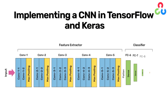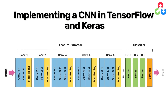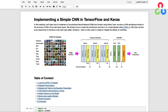In this video, we'll learn how to implement a convolutional neural network from scratch using Keras. Here we show a simple CNN architecture that we'll learn how to model from scratch in Keras and train it on a small dataset called CIFAR10. We'll also use this as an opportunity to introduce a new layer type called Dropout, which is often used in models to mitigate the effects of overfitting.